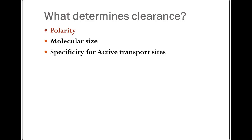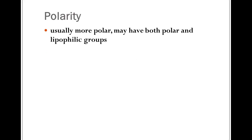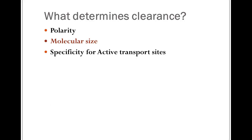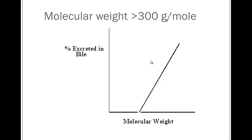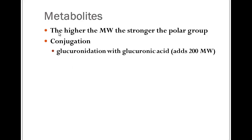The more polar it is, the more likely it is going to be removed through the biliary system, but it can have both polar and lipophilic groups. Molecular size: a molecular weight of 300 grams per mole or more is what we're looking at. The larger the molecular weight, the stronger the polar group, the more likely it will be removed. Also for metabolites, if they're conjugated — undergoing that phase two type metabolism, especially glucuronidation with glucuronic acid being added — this adds 200 grams per mole right there. So it's likely that if it has this big group put on it, it's going to have to be removed by the bile because it will be too large to be removed in the urine.